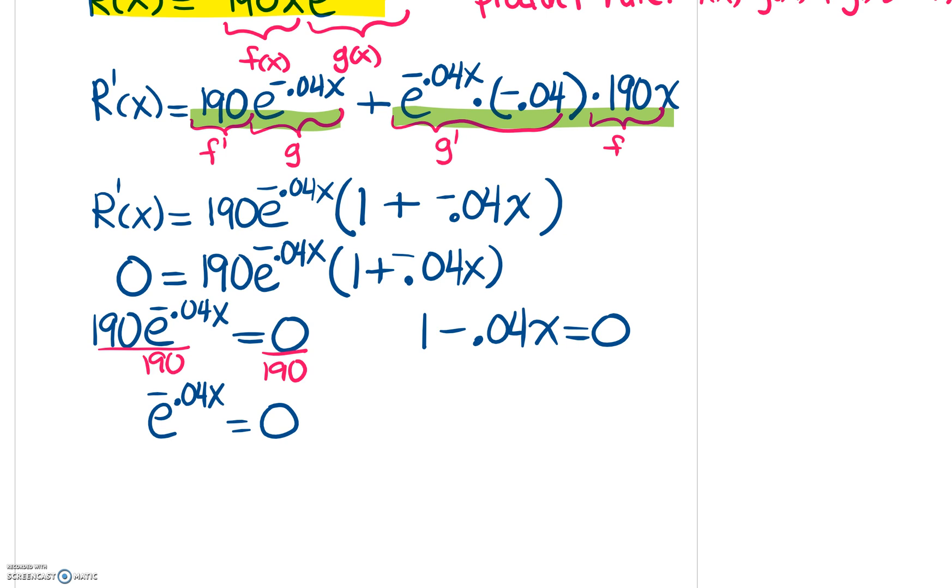If you want to keep going, you could try taking the natural log of both sides. But when you take the natural log of zero, that's undefined. So this is not going to give us any solution. This is not going to find us an X value or a critical point. This other one, however, will. So if I move my 0.04 X to the other side and then solve this, I'm going to have 1 equals 0.04 X. And then if you divide both sides by 0.04, you're going to end up with a nice number, X equals 25. So this is our critical point. And it's our only critical point.